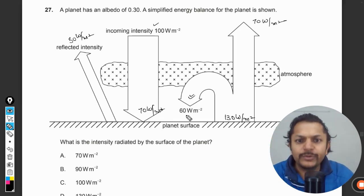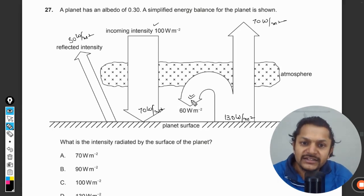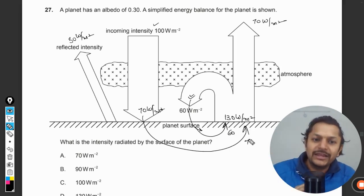The 60 W/m² energy which was trapped in the atmosphere is again going to the surface and it is again mixed with this 70. So it's basically 70 plus 60 that is coming here.